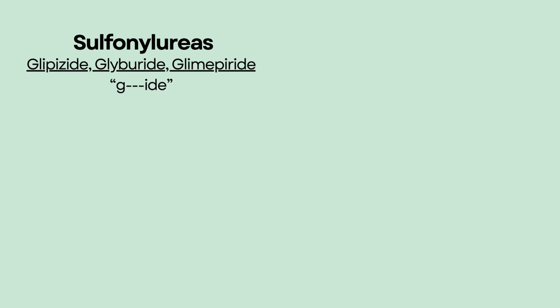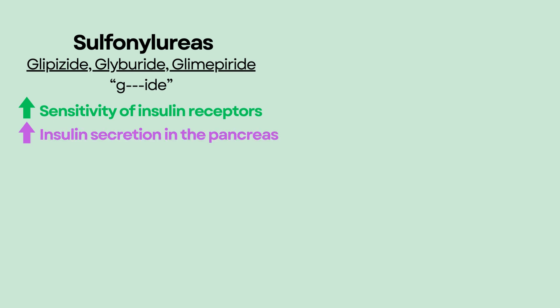Sulfonylureas is the next category, which includes glipizide, glyburide, and glimepiride. Note that they all start with 'G' as in glucose and end with '-ide.' Sulfonylureas increase sensitivity of insulin receptors and also stimulate the pancreas to release more insulin. For that reason, hypoglycemia can occur with sulfonylureas, and it can also cause weight gain.